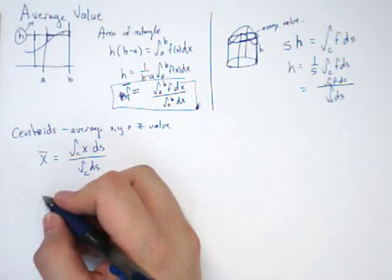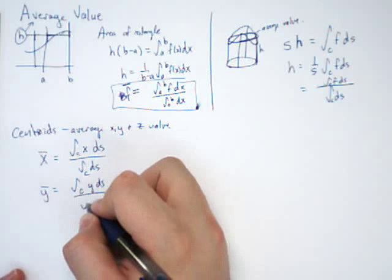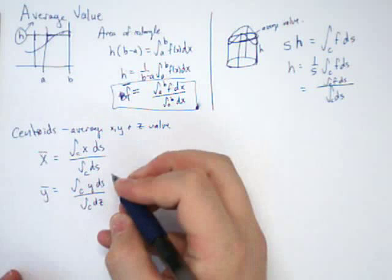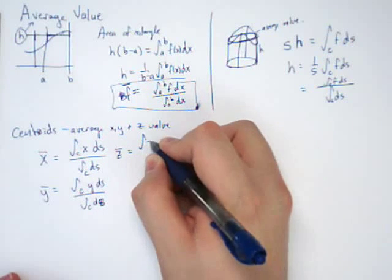How do you get the average Y value? Well, you put a Y inside. And any guess on how you get the average Z value? You got it. You put a Z inside.